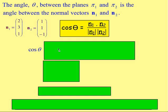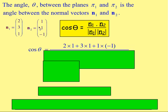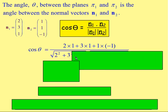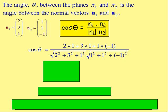If we start subbing in values then, so n₁ dot n₂, we're wanting the scalar product or the dot product. So you'd have 2 times 1, add on 3 times 1, add on 1 times negative 1. On the bottom here, the magnitude of n₁, just remember that's going to be the square root of 2 squared plus 3 squared plus 1 squared. The magnitude of n₂, that will be the square root of 1 squared plus 1 squared plus negative 1 squared.